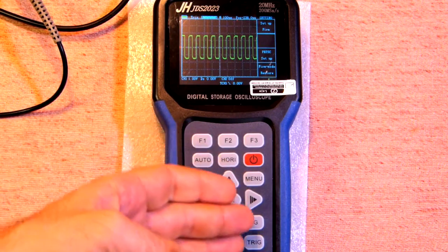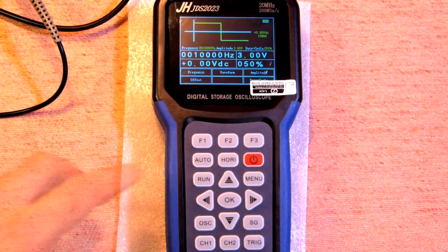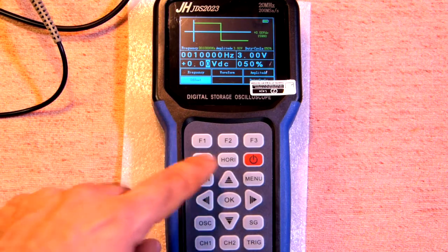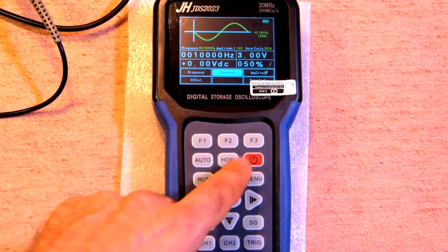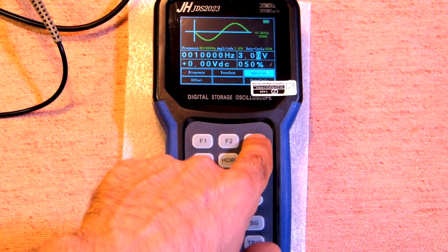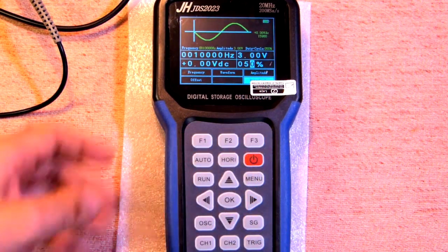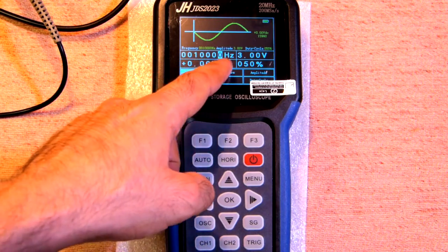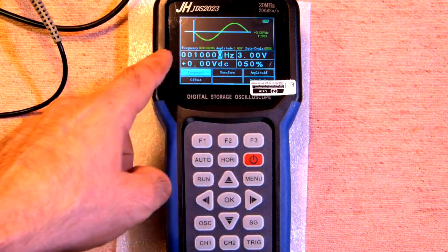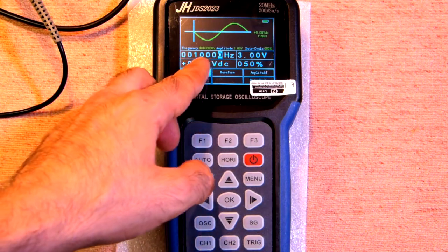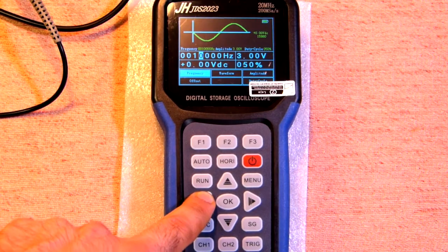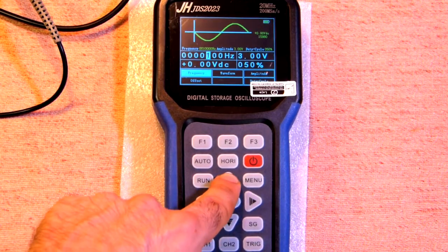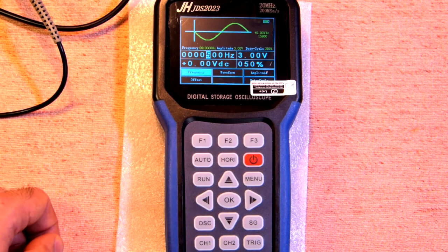And now let's check the signal generator. F1 is frequency. And the second pressing is offset. F2 is waveform. F3 is amplitude. And once again is duty cycle. Let's adjust the frequency. Here in frequency mode we can change all the digits here. For example, let's adjust 500 Hz to 0, then to 5. Let it be sine wave.